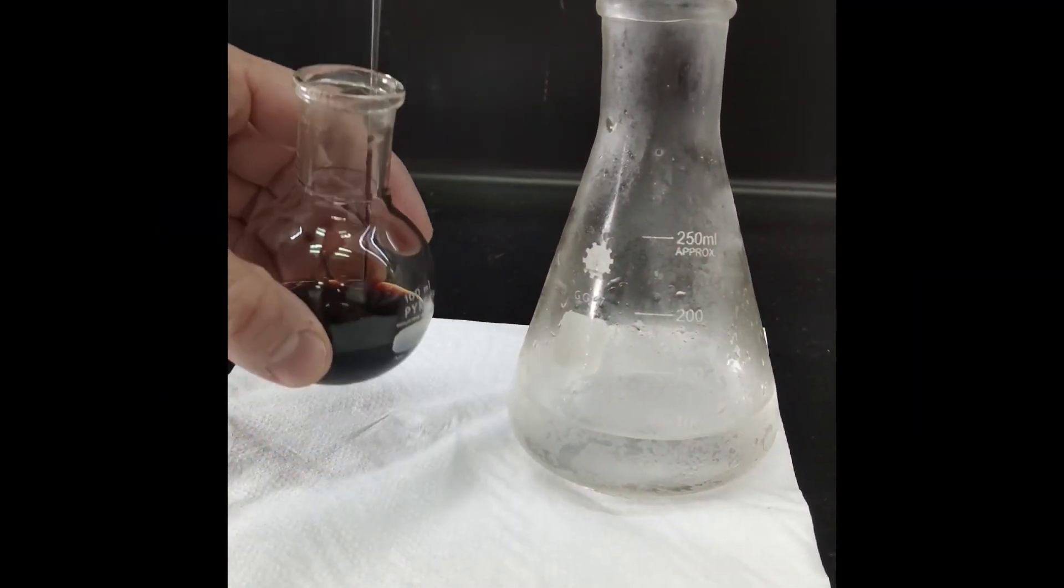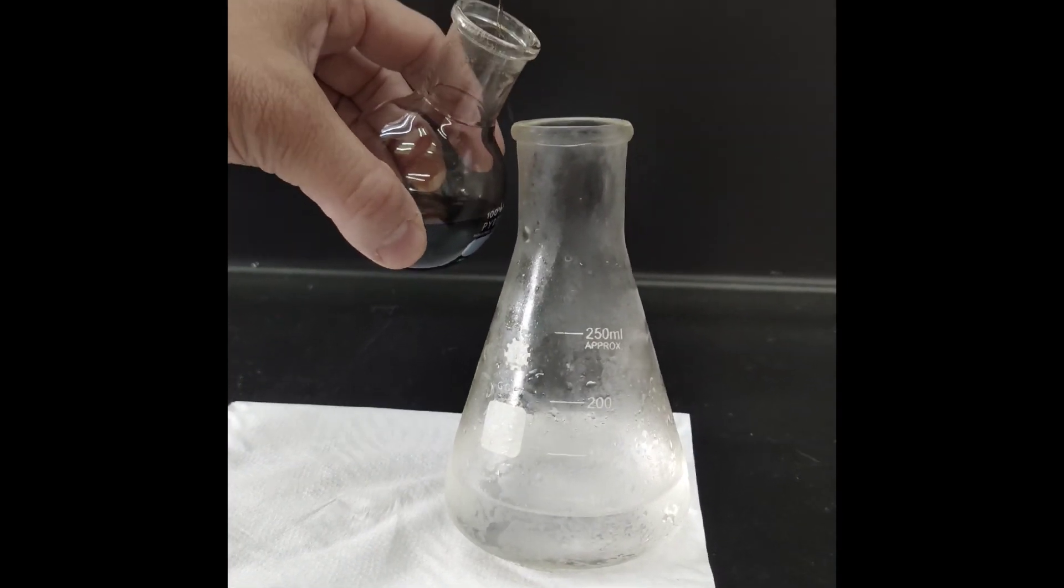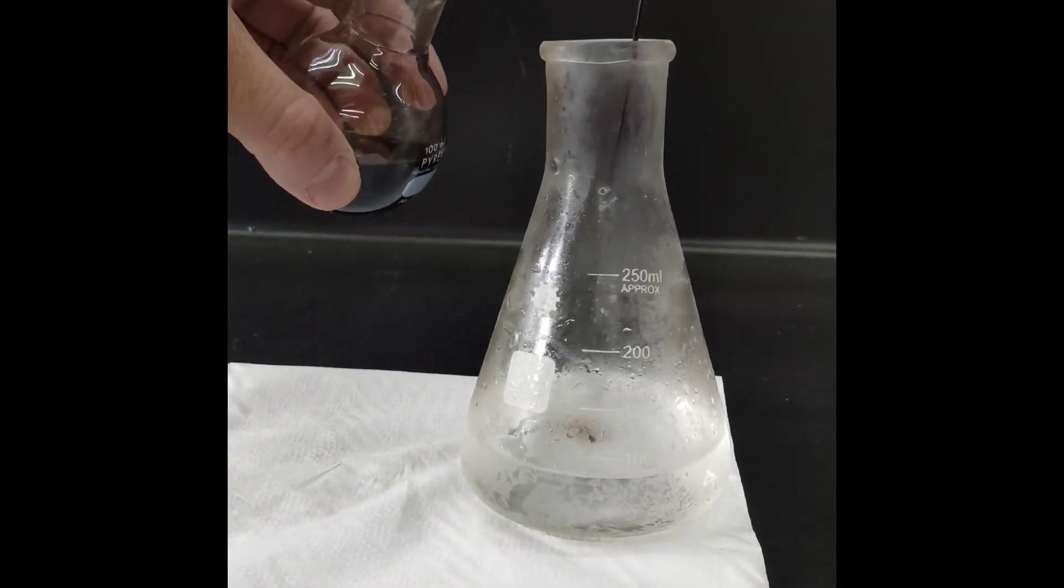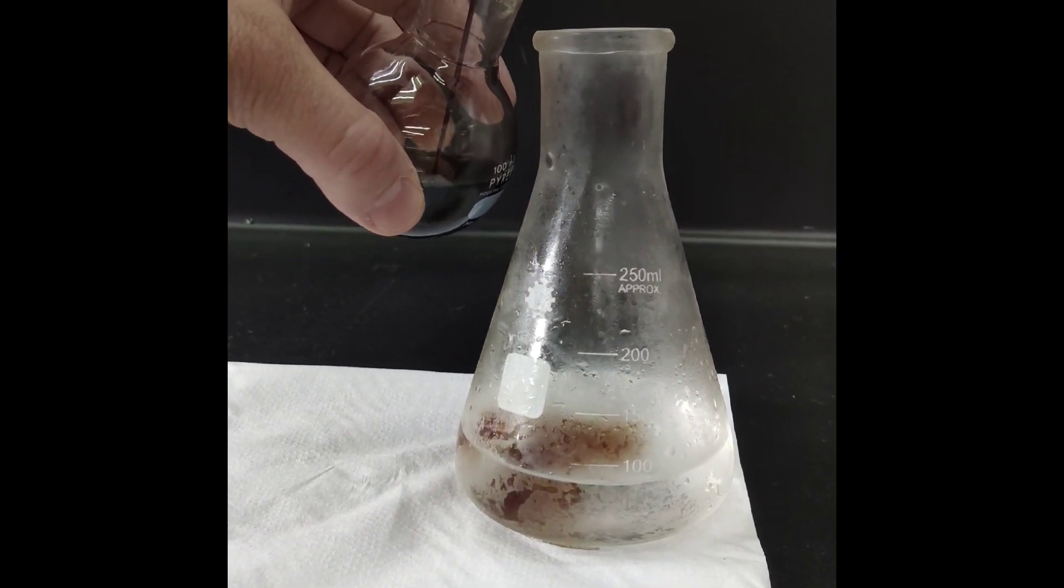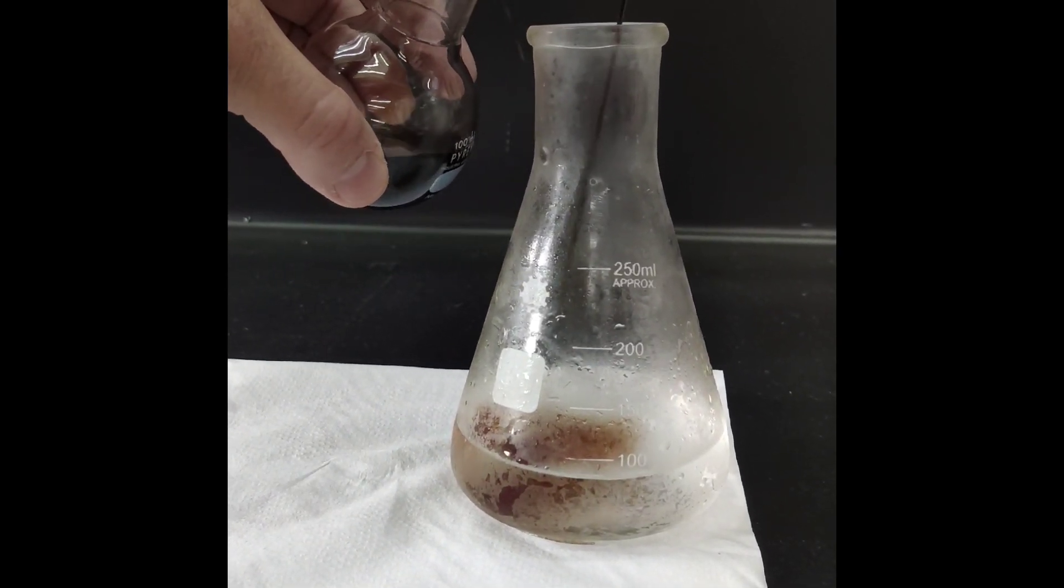We pour the content of the reaction flask onto the brine using a pipette. We can see that a brick red precipitate forms almost instantly.